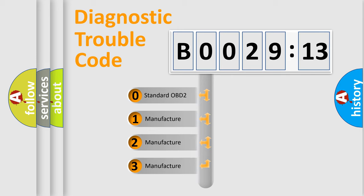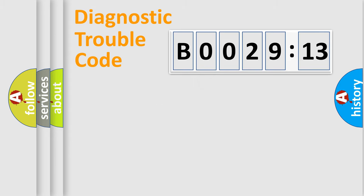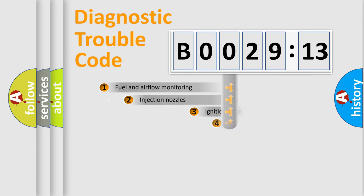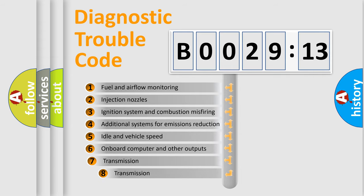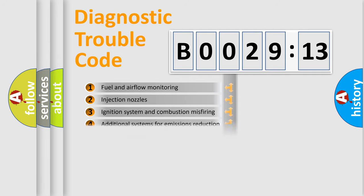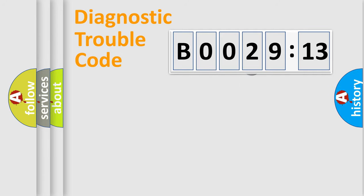If the second character is expressed as zero, it is a standardized error. In the case of numbers 1, 2, 3, it is a manufacturer-specific error. The third character specifies a subset of errors. The distribution shown is valid only for the standardized DTC code. Only the last two characters define the specific fault of the group.